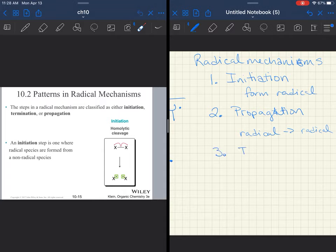Number two, propagation. Propagation—that's where we start with a radical, and we have a radical at the end of the step. There can be multiple propagation steps in a mechanism.